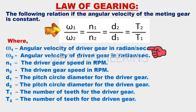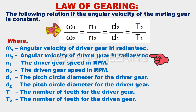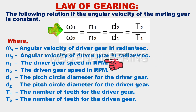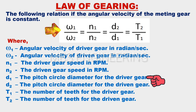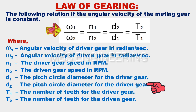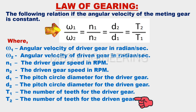Omega 1 is the angular velocity of the driver gear in radians per second. Omega 2 is the angular velocity of the driven gear in radians per second. N1 is the driver gear speed in RPM. N2 is the driven gear speed in RPM. D1 is the pitch circle diameter for the driver gear. D2 is the pitch circle diameter for the driven gear. T1 is the number of teeth for the driver gear. T2 is the number of teeth for the driven gear.